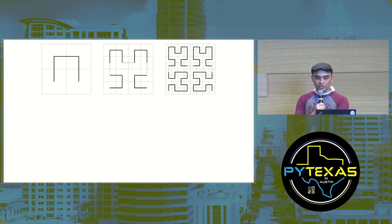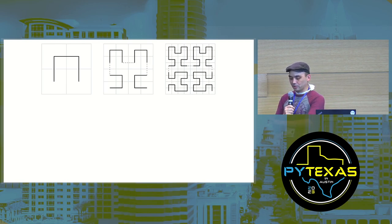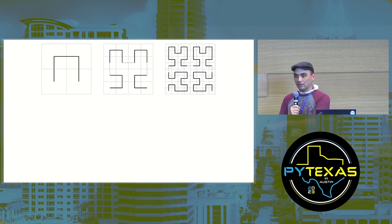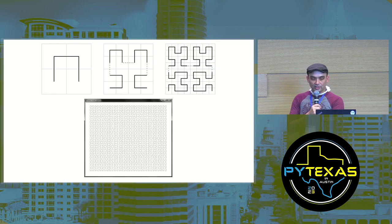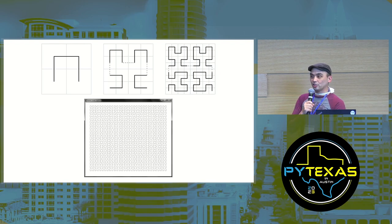This one's called the Hilbert curve. You take this shape, make three copies, rotate them around and connect them — that forms the new shape. If you keep doing that on graph paper, you have a contiguous line that touches every square of the graph paper. These are called space-filling curves. All of these are drawn in Python.